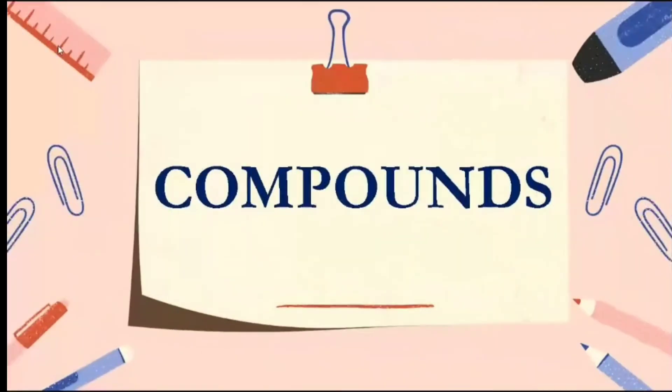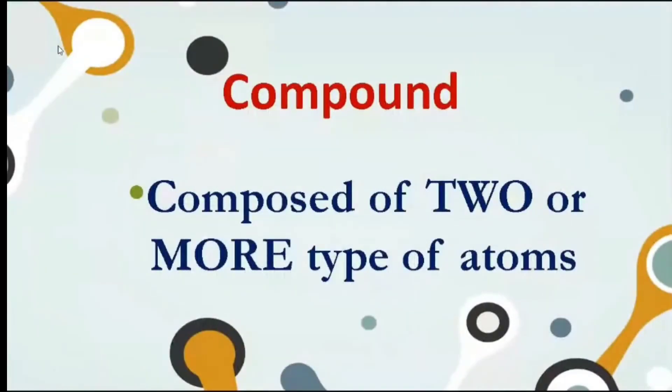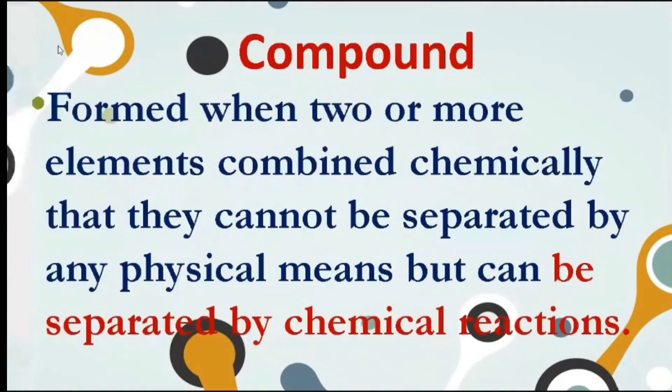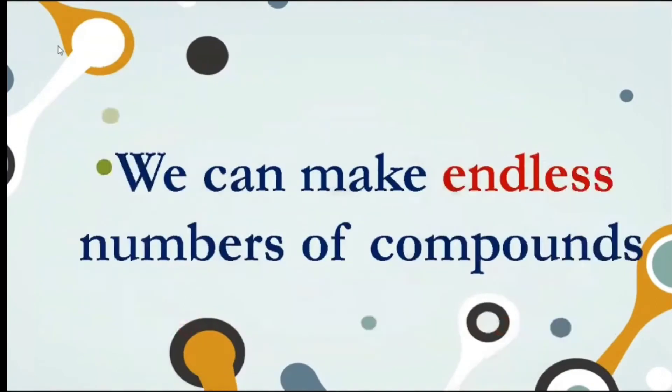Number 2. Compounds. Next type of pure substance is a compound. Compound is composed of two or more types of atoms, which is formed when elements combine chemically that they cannot be separated by any physical means, but can be separated by chemical reactions. We can make endless numbers of compounds by combining different ratios of different elements.